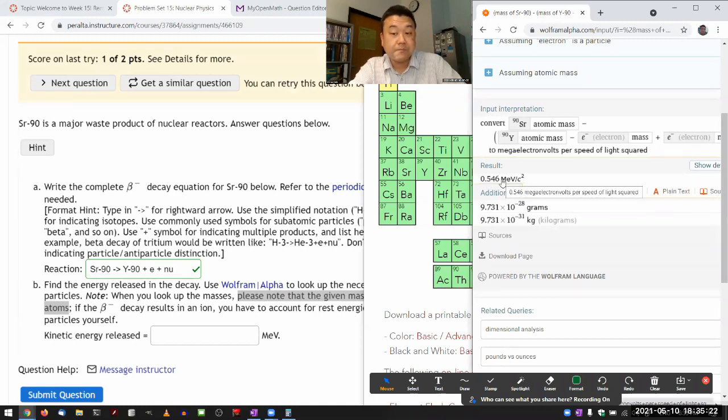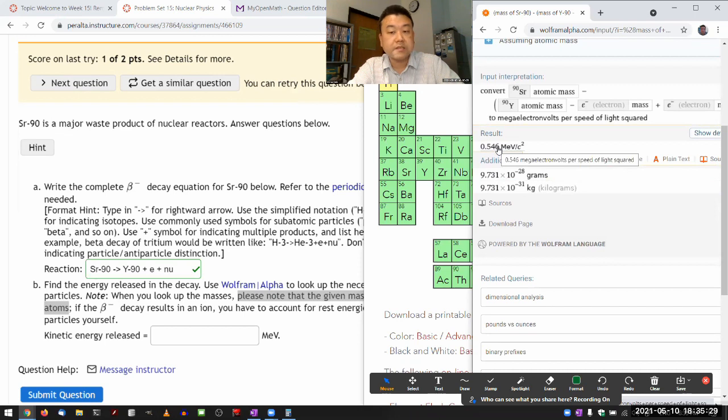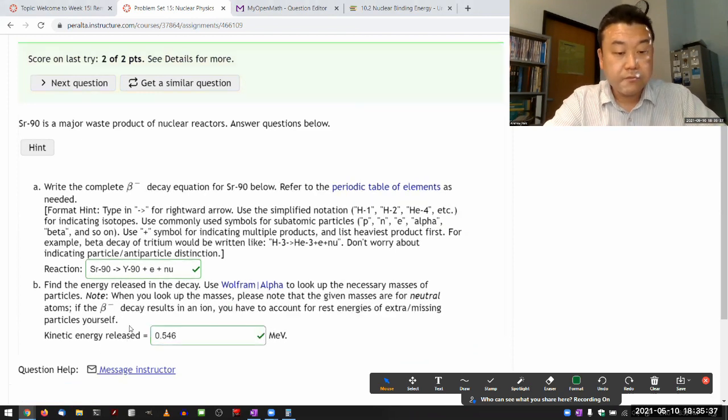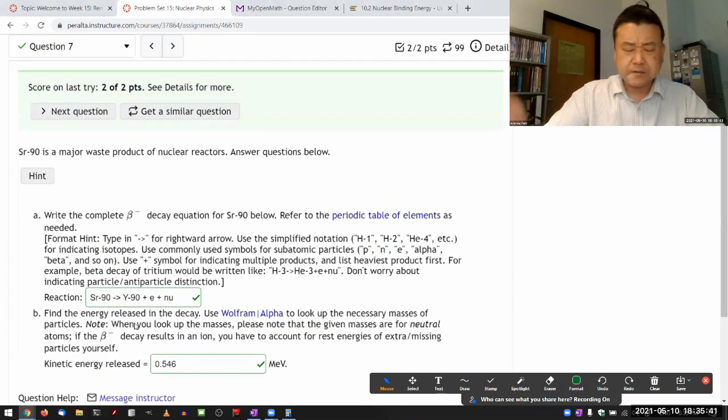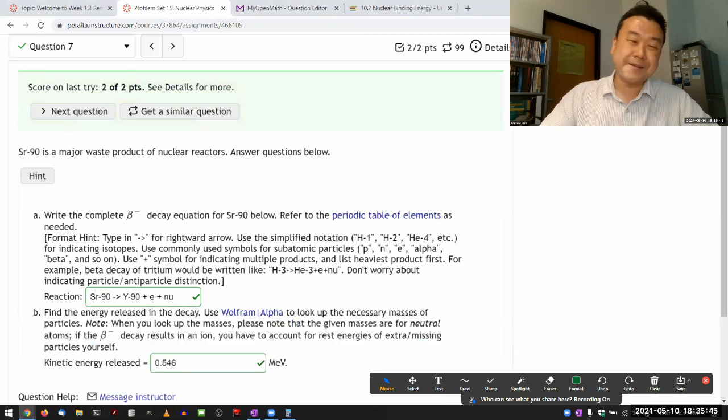especially compared to the electron rest energy 0.511. So the electron beta particle that's released here, it's basically barely relativistic, where the kinetic energy starts to be comparable to the rest energy. So 0.546, 0.546. And here, if you don't account for that rest energy of electron, your answer will be graded as incorrect. And I think that's reasonable, especially because you should see this now.